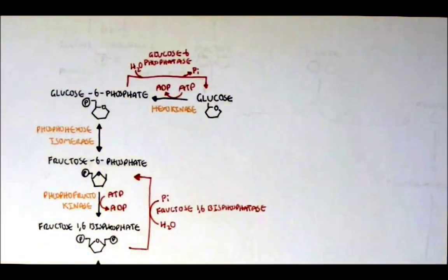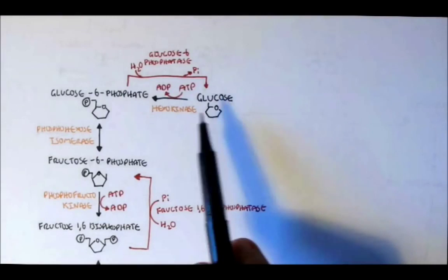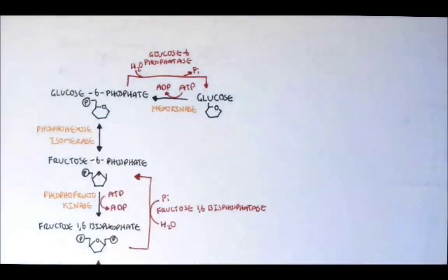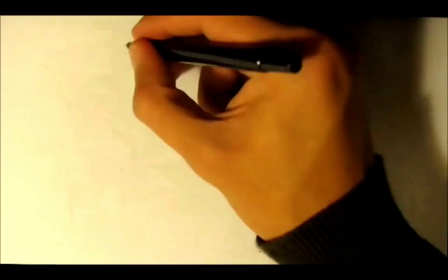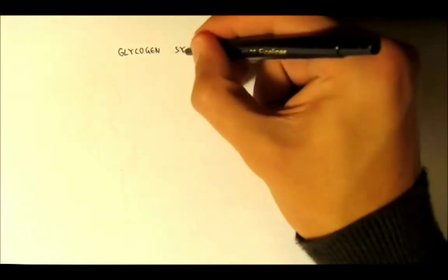So next let's talk about glycogen synthesis. Now the synthesis of glycogen actually does not begin with glucose but usually begins with glucose-6-phosphate. So glucose has to convert to glucose-6-phosphate before initiating glycogen synthesis. So what is glycogen anyway?